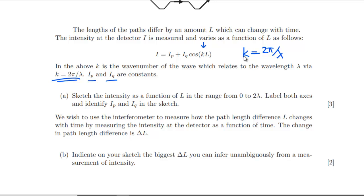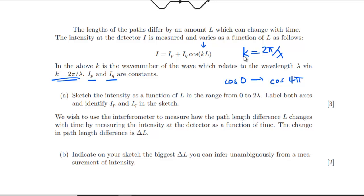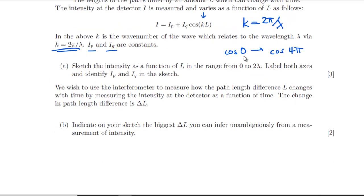Sketch the intensity as a function of L in the range 0 to 2λ. Label both axes, identify Ip and Iq in the sketch. Right, so if we're going from 0 to 2λ, that's for L. We're going from cos 0 to cos of 2λk. 2λk is going to be 4π. Cos of 4π, so we've got two cycles that we're doing on this.